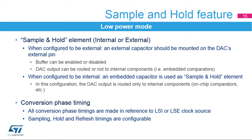The capacitor can be external or internal. When external, the buffer can be used and the DAC's output can also be routed to internal components such as embedded comparators. When internal, an embedded capacitor is used and the DAC's output is routed only to internal components. The charging time depends on the capacitor value. The timings for the three phases are in units of LSI or LSE clock cycles.